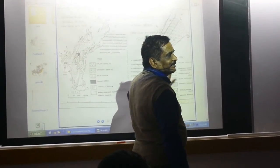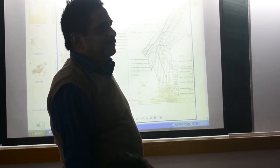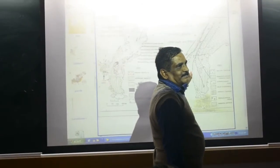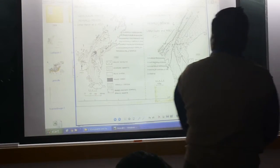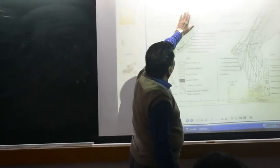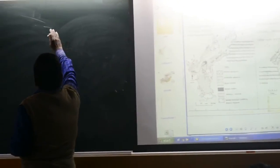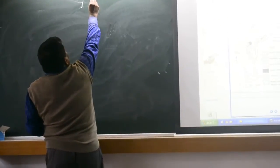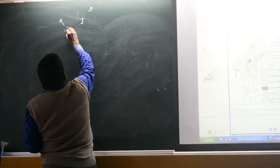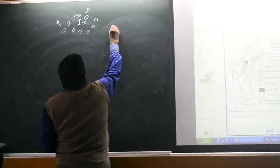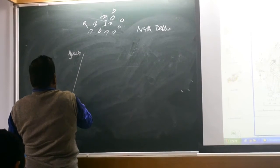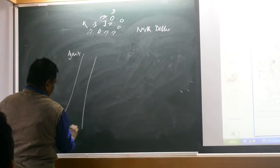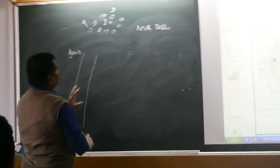Now let us go to Delhi. Delhi Supergroup — where is it? There are two Delhi's which have not been discussed earlier. Here on the map: this is North Delhi and this is South Delhi. Around Jaipur, Khetri is on one side — there are some isolated outcrops called North Delhi. And from Ajmer, a linear band starts — here is your Ambaji, you visited this area. So this is called South Delhi.